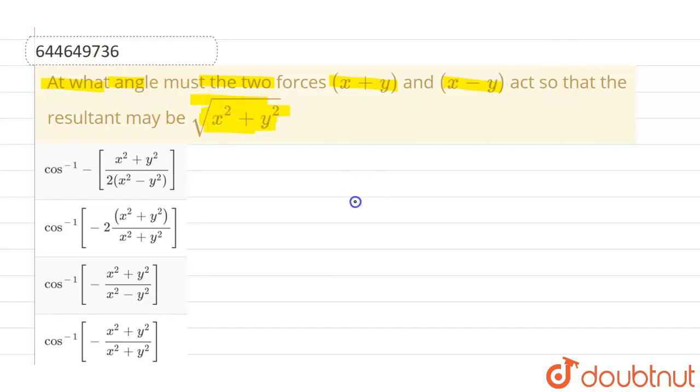Now, we know that resultant of two vectors is denoted by the expression √(a²+b²+2ab cos θ), where a and b are magnitudes of both the vectors.